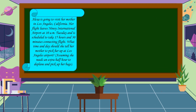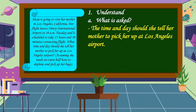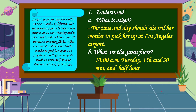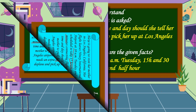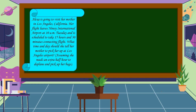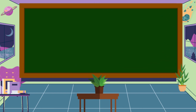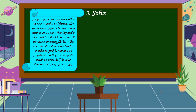To answer this problem, first we're going to understand what is asked. In this problem, it is asking for the time and day she should tell her mother to pick her up at Los Angeles airport. The given facts are 10 a.m. Tuesday, 15 hours and 30 minutes, and another half hour. We understand the problem. The next step is we're going to make a plan. The strategy we can use to solve the problem is a number line.